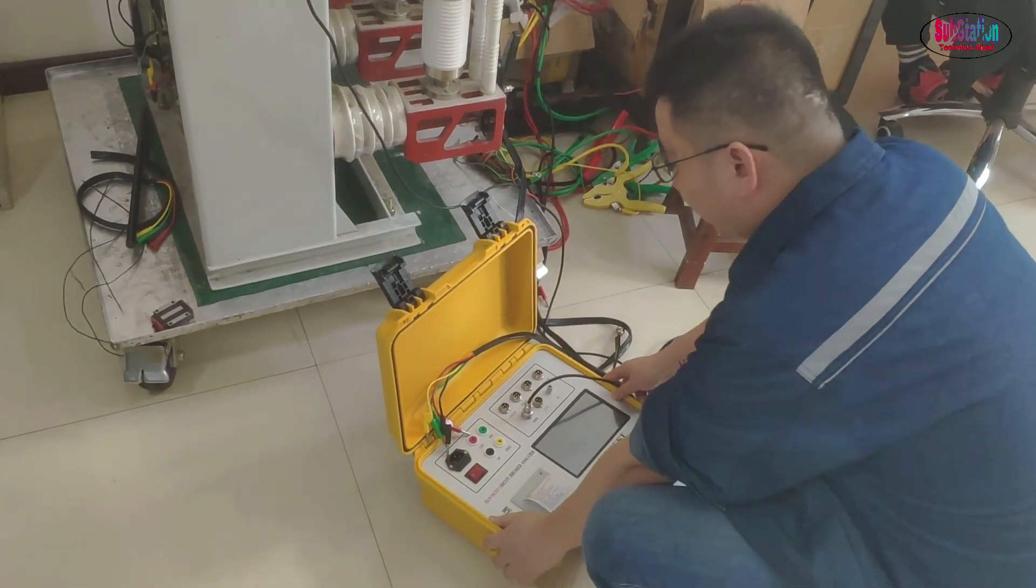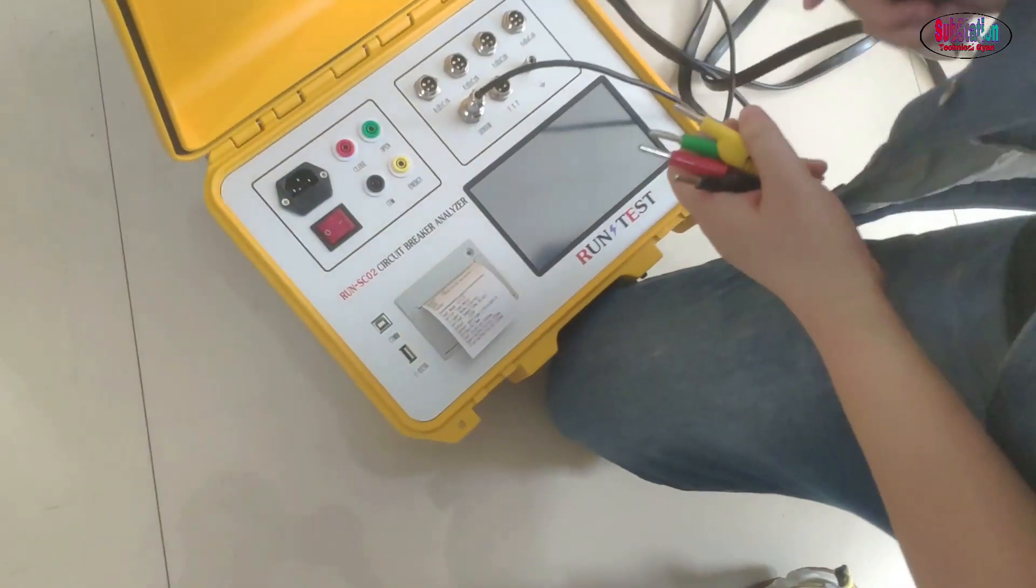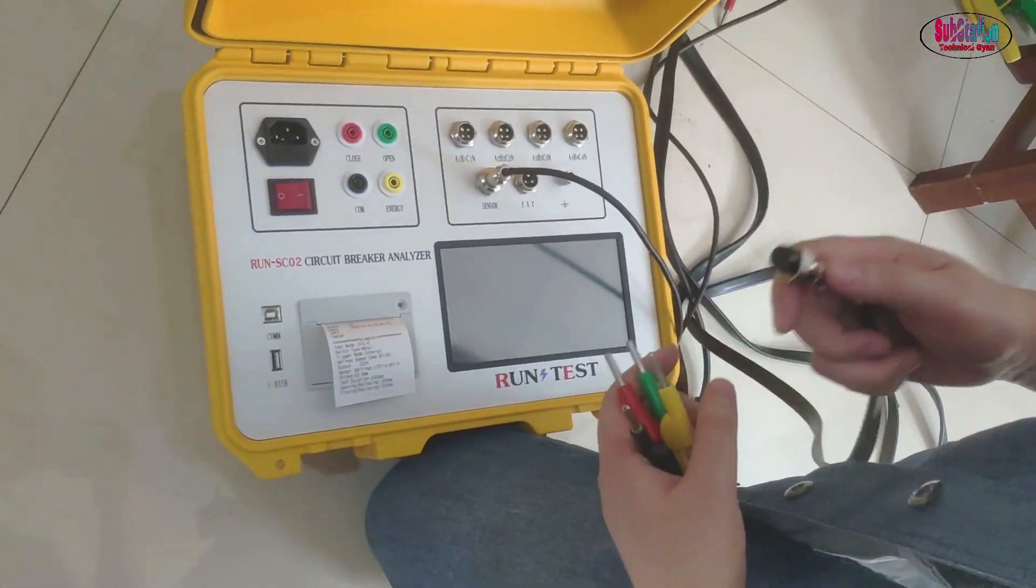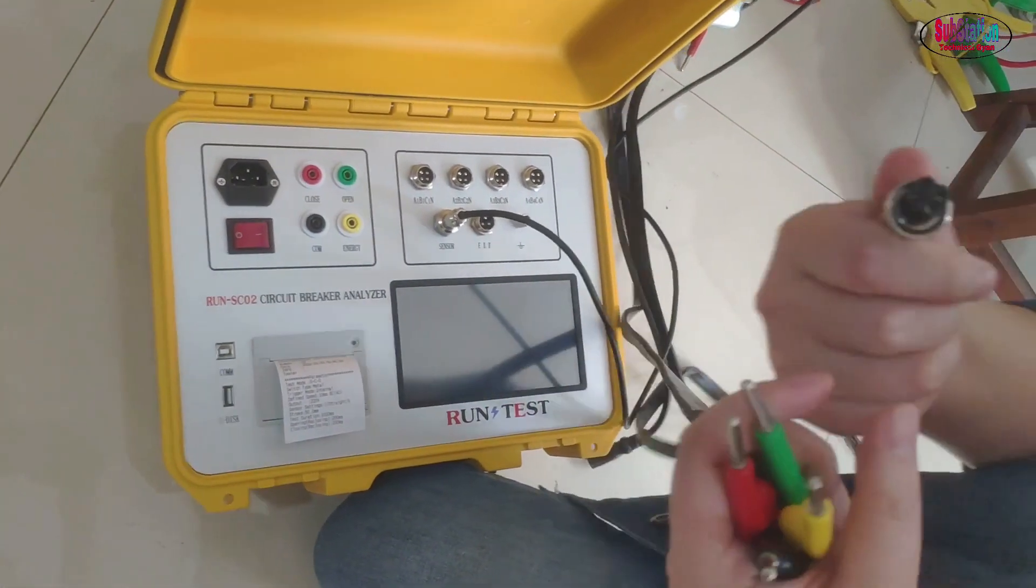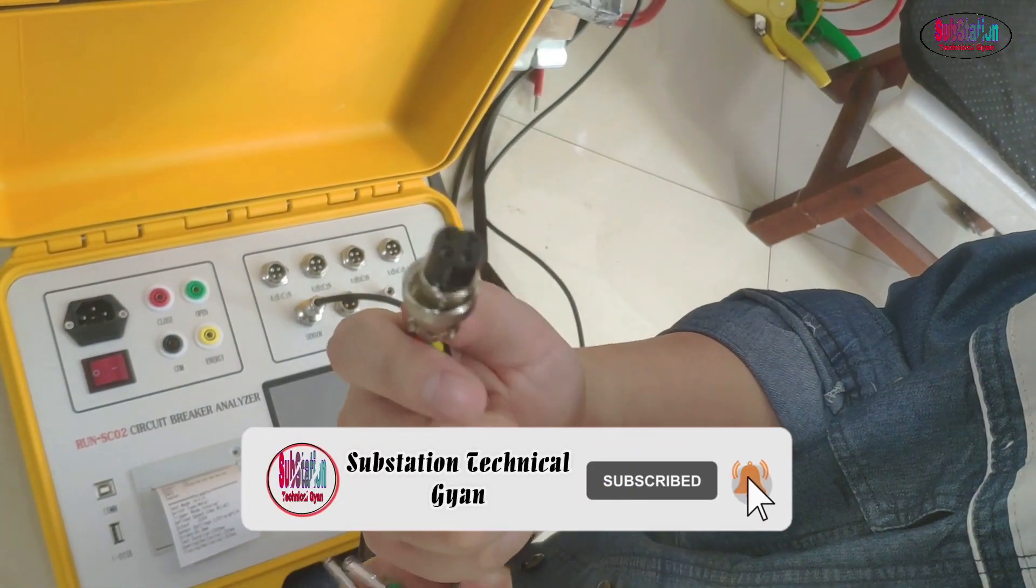This is our circuit breaker analyzer and today we are going to test the circuit breaker. We check this. This is the fracture of the cables, it has four parts.